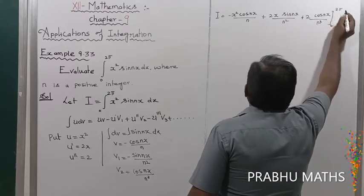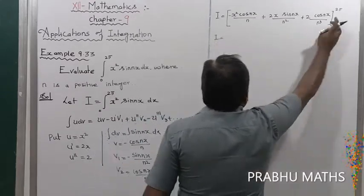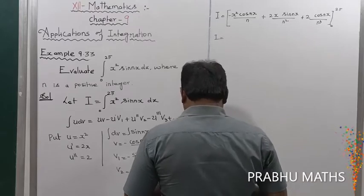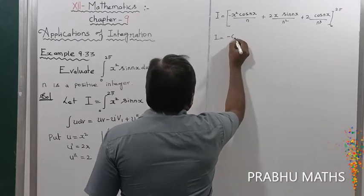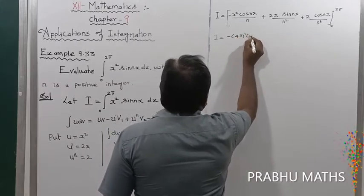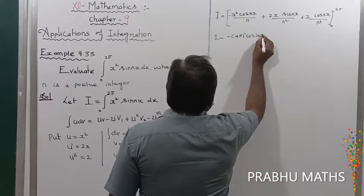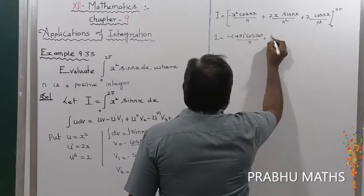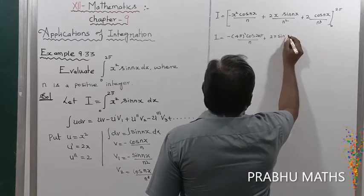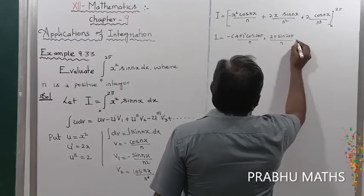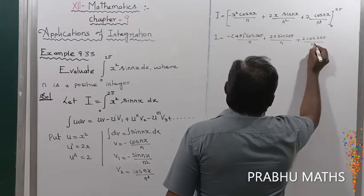Substituting the upper limit x = 2π: the first term gives −(2π)²·cos(2nπ)/n, the second term gives +2·(2π)·sin(2nπ)/n², and the third term gives +2·cos(2nπ)/n³.